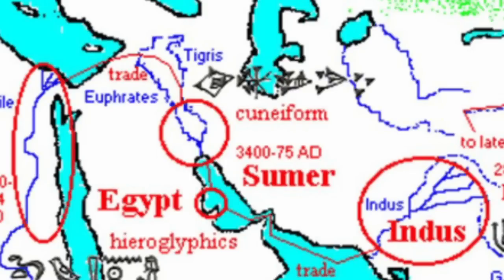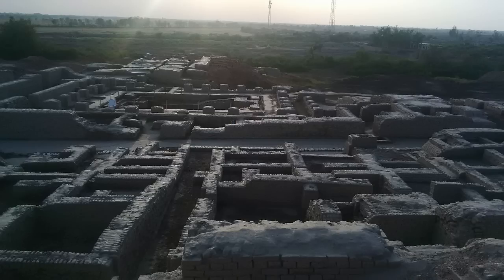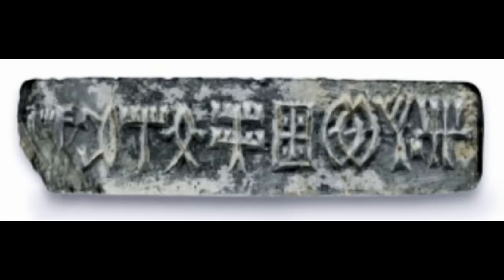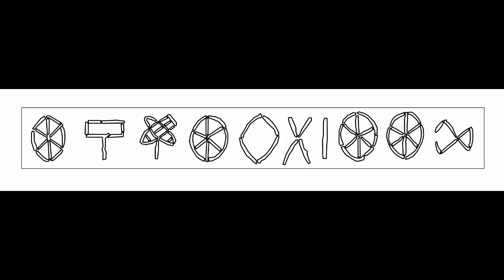What truly sent the archaeologists spinning as they unearthed this civilization was its age. At over 5,000 years, the Indus Valley Civilization, or Harappan for the more poetic, was a contemporary of the first great civilizations of Egypt and Mesopotamia, though far larger than either. Despite its vast extent, it managed to maintain common systems of urban design, weights and measures, and, most frustratingly for us, because we can't read it, written language.